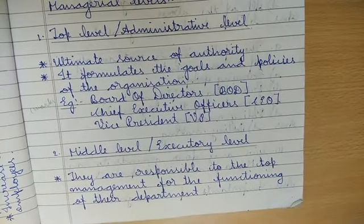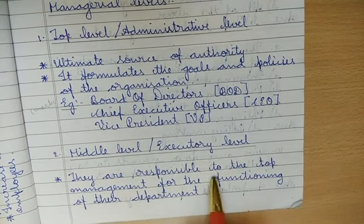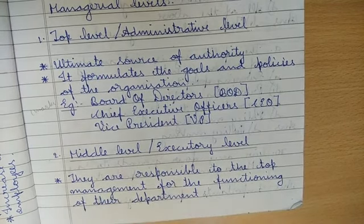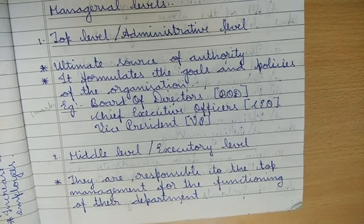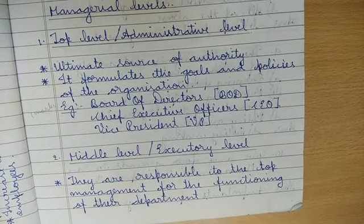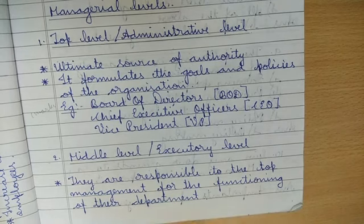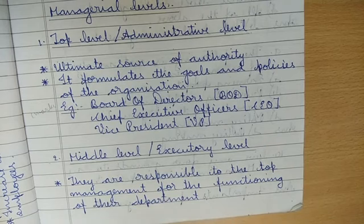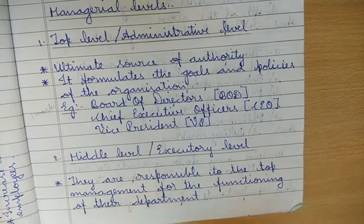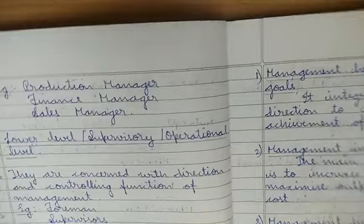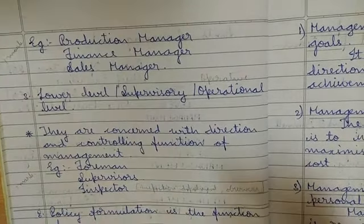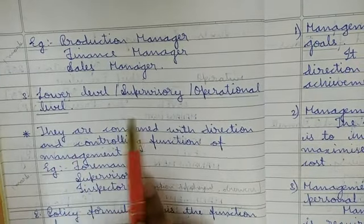Middle level management is also called the executory level. They are responsible to the top level management for the functioning of their department. For example, as a finance manager, you follow the orders given by your chief executive officer or vice president. Examples of middle level management are production manager, finance manager, and sales manager.